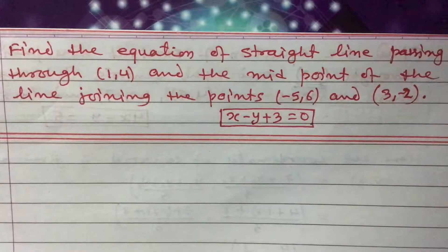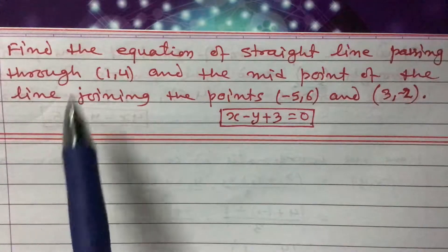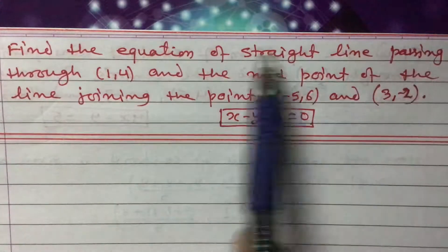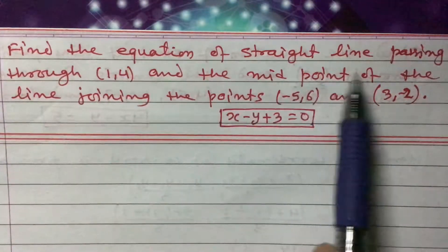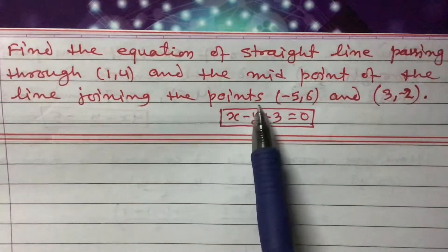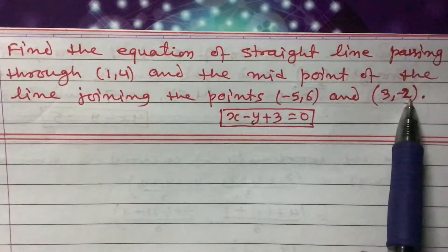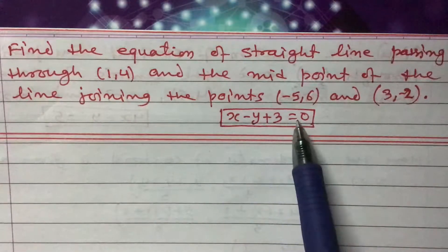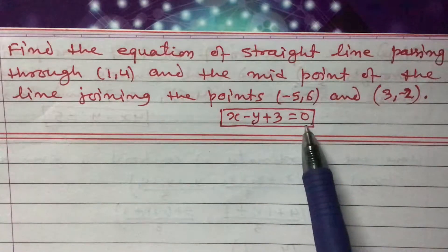Dear students, today I'm going to teach you one question related to the equation of a straight line for Class 9. The question is: find the equation of a straight line passing through the point (1, 4) and the midpoint of the line joining the points (-5, 6) and (3, -2). The given answer is 4x minus y plus 3 equals 0 — whether this answer is right or wrong, we will know after solving.